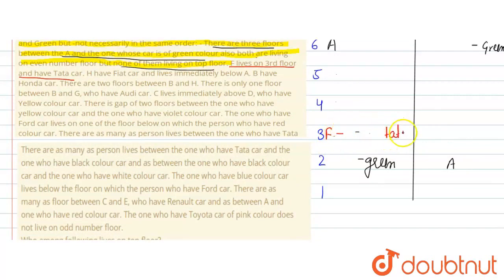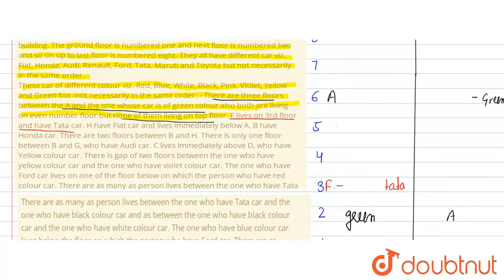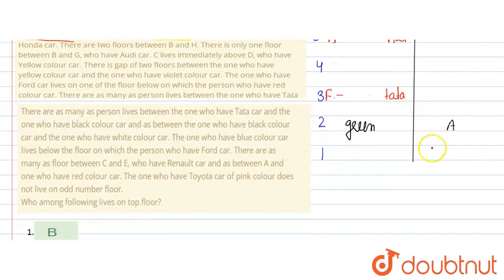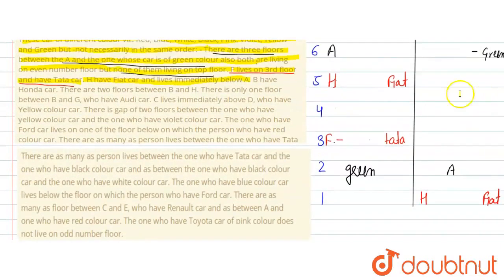We now assign the green color to the appropriate position. Then, H lives immediately below A, and H has a PR car. Next, it is given that B has a Honda car, and there are two floors between B and H, and there is one floor between B and G, who has an Audi car.